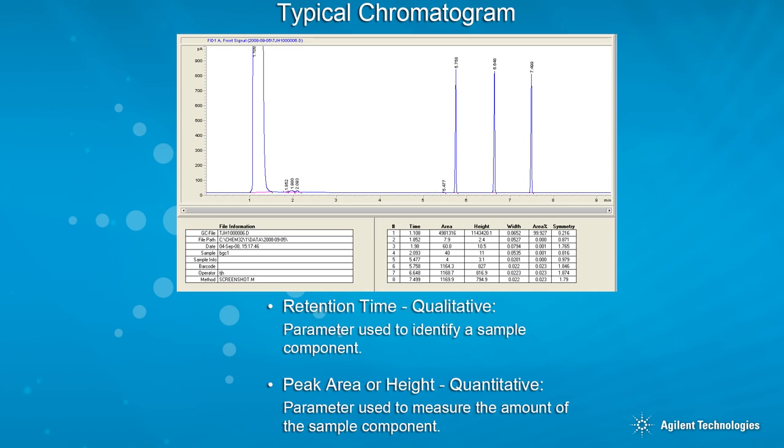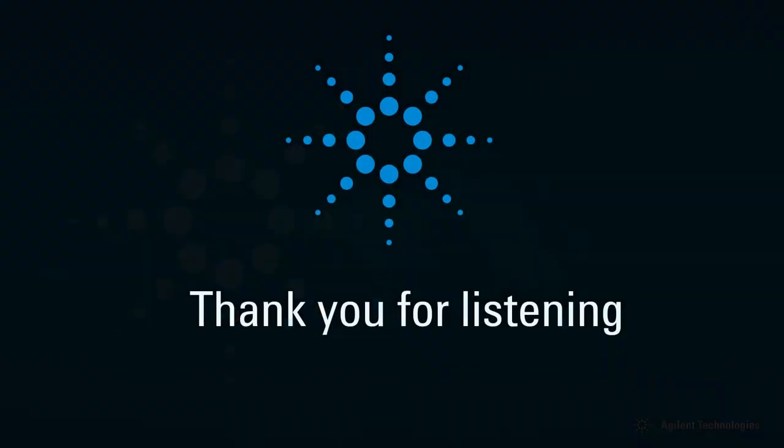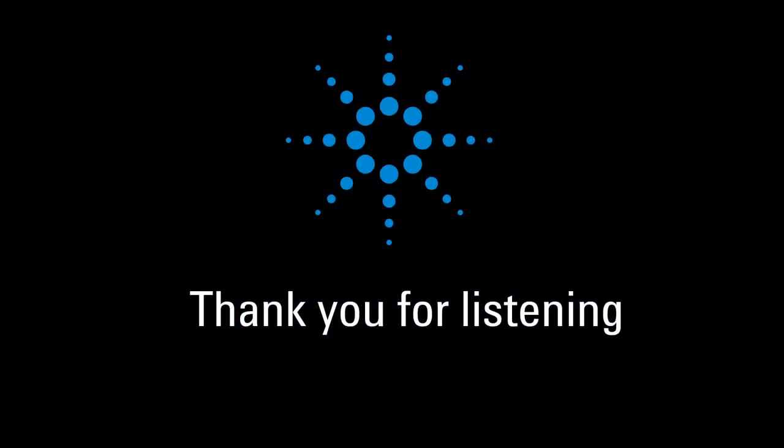Peak height or area is used to determine the amount of components present. Standards of known amounts of the components can be used as a reference in a calibration procedure to produce quantitative results that report the amount or concentration of each calibrated peak. Peak height or area of energy in the magnitude of the peak in the size.